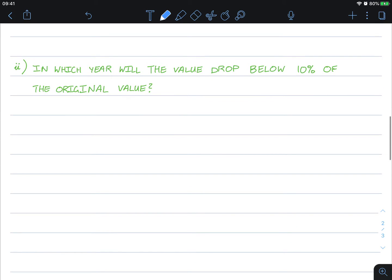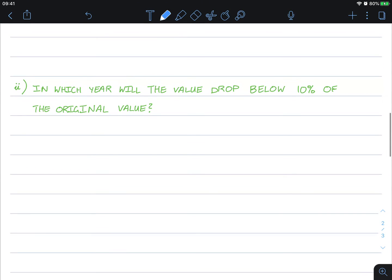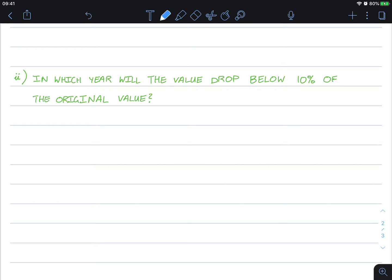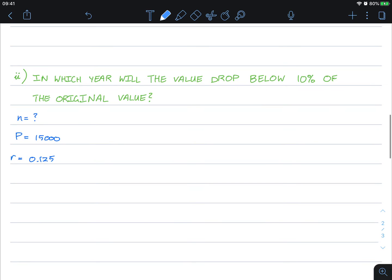Okay, so let's keep going here. In which year will the value drop below 10% of the original value? In this case they're asking for n, so n is what we are looking for. We have the original value, we have the rate, and in this case we need another value of A_n. A_n is 10% of the original value, so we're looking for 1,500, which is 0.1 times 15,000. So we're looking at which time it will be equal to 1,500. So substituting these in.